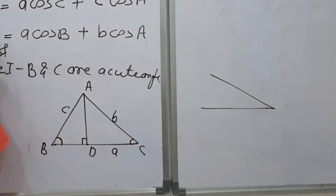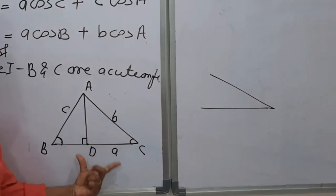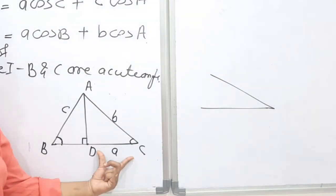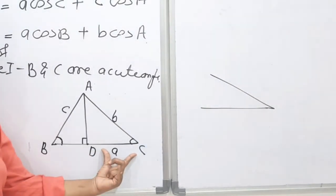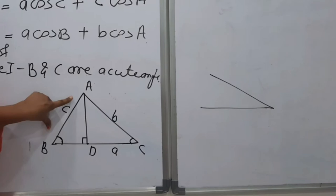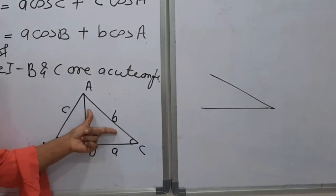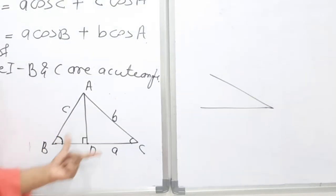Our aim is to find a. A means here BC. And BC is nothing but BD and DC. It means ultimately we have to find BD and DC, which are the projections of AB and AC respectively.